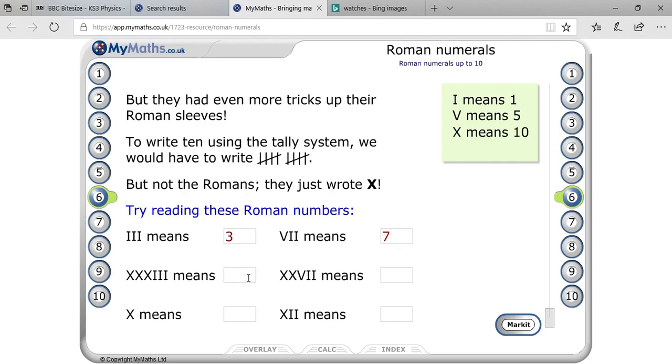Here you can see X, X, X. That is 10, 20, 30 and 1, 2, 3. So it will be total 33.